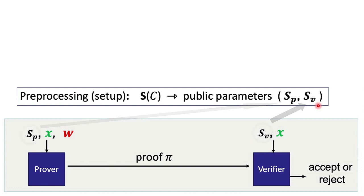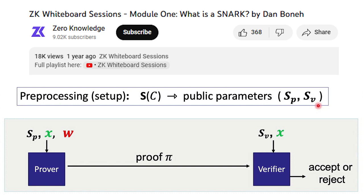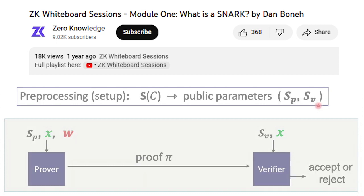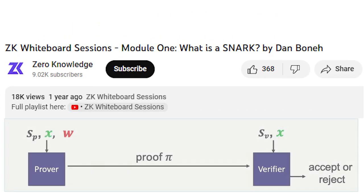This essentially allows them both to compute the same proof, and this initial setup phase can have its own security and centralization risks depending on how it is generated. I've adapted some of these pre-processing images from this video by Zero Knowledge, so if you want to know more about pre-processing, go check out this video. It's amazing.